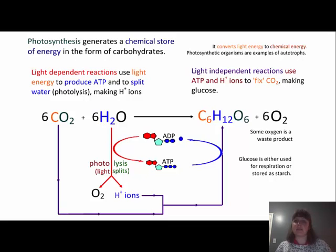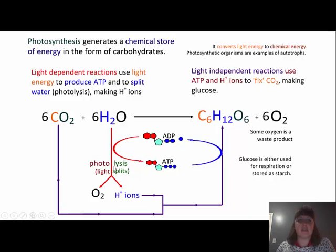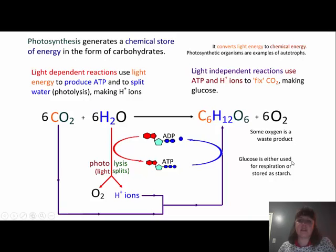Those hydrogen ions go on to the light independent reactions, where we also use ATP to fix the carbon dioxide taken from the atmosphere into the plant to make glucose. The carbon dioxide goes straight into the glucose when combined with the hydrogen ions. We take the water and split it using light — that process is called photolysis, or light splitting. Photolysis splits water into oxygen atoms released as gas and hydrogen plus ions.